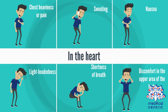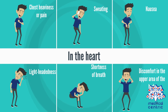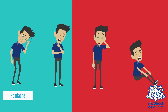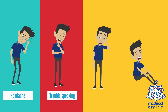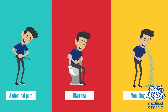In the heart, symptoms may include chest heaviness or pain, sweating, nausea, lightheadedness, shortness of breath, discomfort in the upper area of the body, and left arm numbness. In the brain, symptoms may include a sudden and severe headache, trouble speaking, dizziness, and weakness in the face or limbs. In the abdomen, symptoms may include severe abdominal pain, diarrhea, and vomiting.